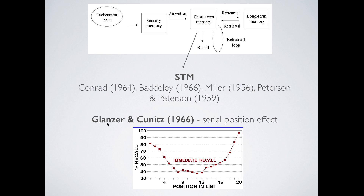In the 1960s, Glanzer and Cunitz put together a really nice study. Very simple but very evocative — we can actually tell a huge amount about the multi-store model based on their work. Basically, what they do is read out a big long list to people, a list of 20 items — far bigger than could ever be remembered in any one person's short-term memory. Then they ask them, at the end of the list, to recall all the items. What they find is that most people are able to recall the last couple of items — the last ones to be read out. The idea is that these are still in the short-term memory, still floating around, still being rehearsed, and they haven't had a chance to be forgotten yet.